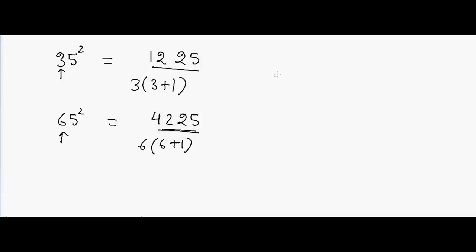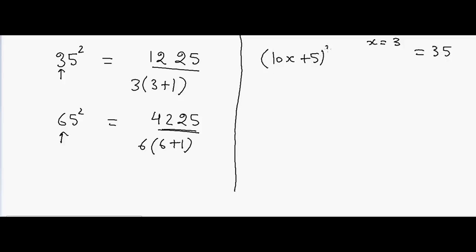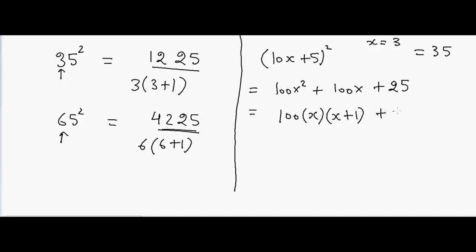How does this trick work? Any number which ends with 5 can be written as 10x plus 5. If x equals 3, this number will be 35. If we square 10x plus 5, that will be equal to 100x squared plus 100x plus 25.